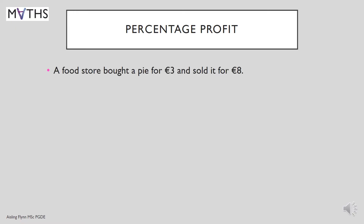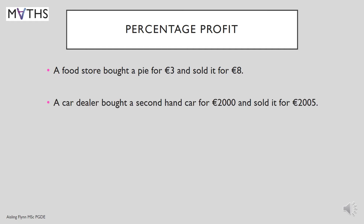Percentage Profit. A food store bought a pie for €3 and sold it for €8. A car dealer bought a second-hand car for €2,000 and sold it for €2,005. What profit was made by each business? By subtraction, you can see that the food store made €5 on their pie, and also the car dealer made €5 on their car. But which business did better?